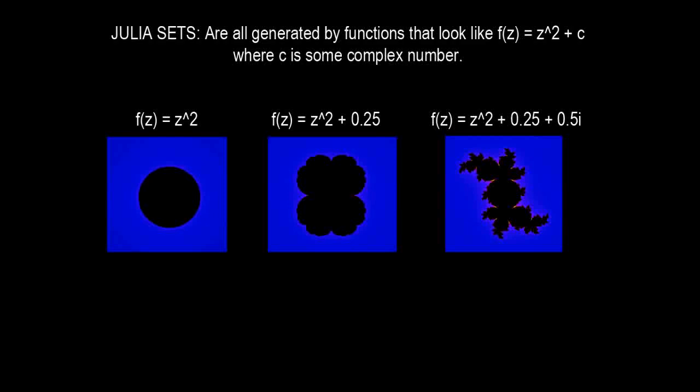So every single Julia set is simply identified by this constant that we are adding on top of the squaring. The circle was the Julia set corresponding to zero because we squared and then we added zero. Our next example was the Julia set corresponding to 0.25. The next example I showed you was the Julia set corresponding to the complex number 0.25 plus 0.5i, and so on.